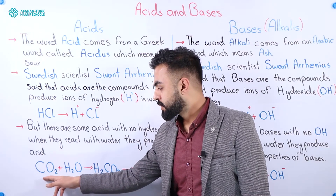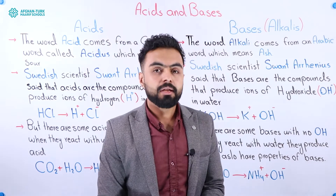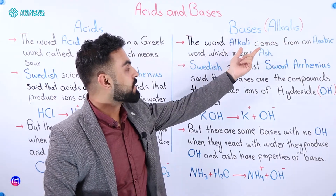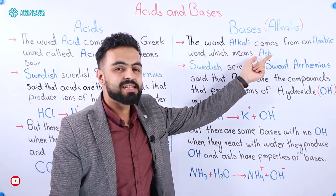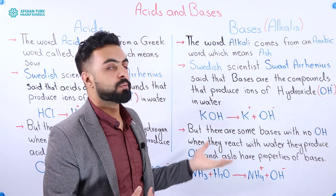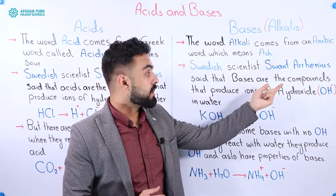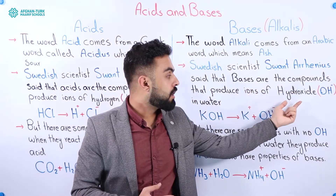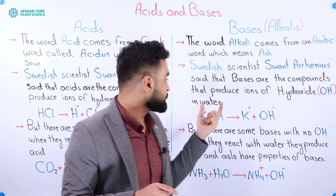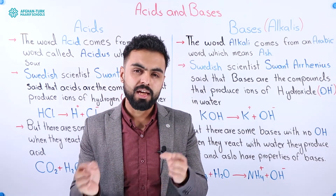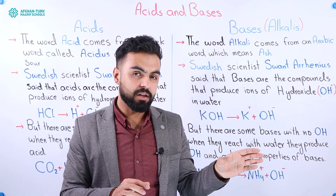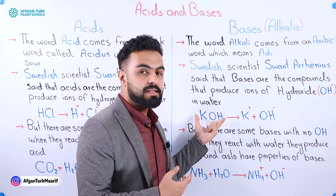Now let's go to bases. Bases are also called alkalis. The word alkali is actually an Arabic word which means ash. Again, Svante Arrhenius, that Swedish scientist, said that bases are the compounds that produce ions of hydroxide — OH⁻ with a charge of minus one — in water. So if we dissolve a compound in water and it produces hydroxide, that compound is a base.